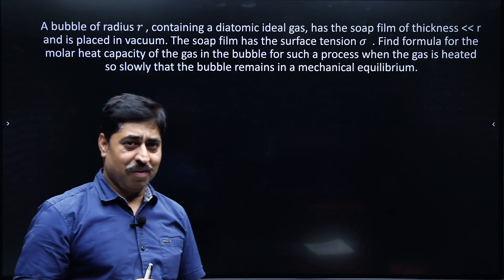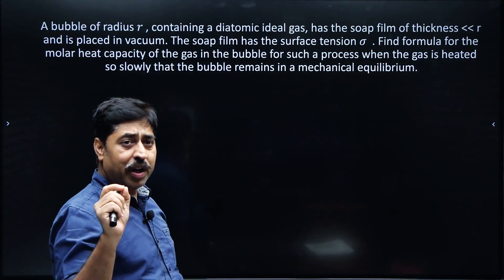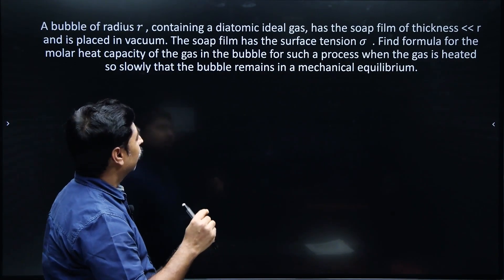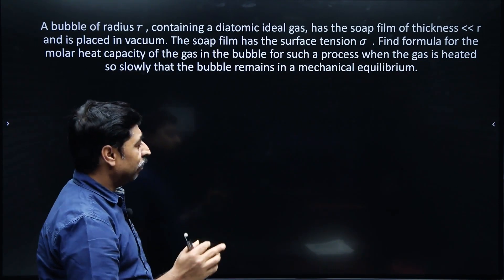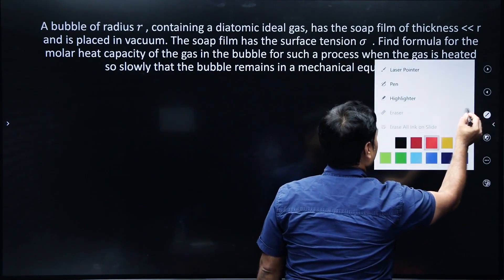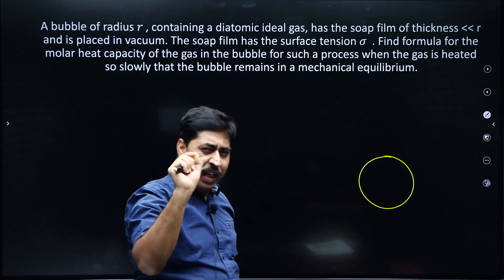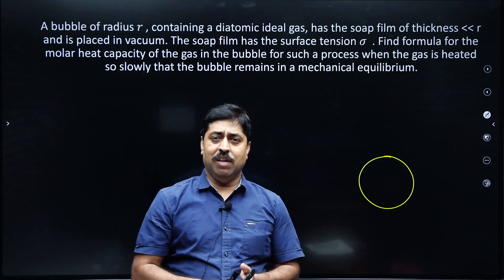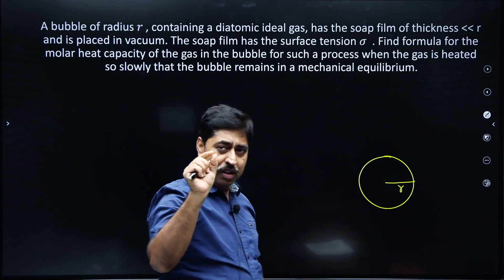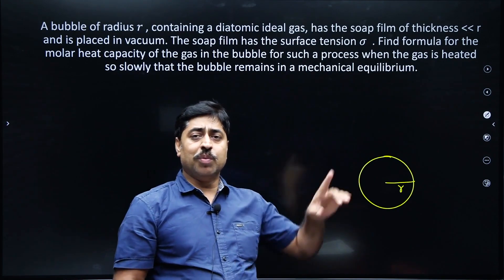Here is the question. A bubble of radius R containing a diatomic ideal gas has a soap film of thickness much less than R, and is placed in vacuum. This means there is a soap bubble which has a very thin skin, as is usual with all soap bubbles. The radius is quite large compared to the thickness of the liquid forming the soap bubble.